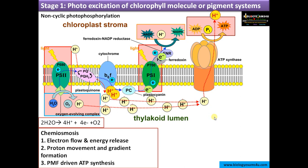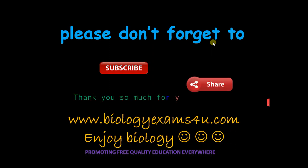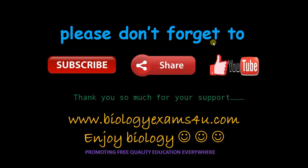This is how chemiosmosis operates in photosynthesis, and it is very similar to ATP synthesis in cellular respiration during the electron transport chain, as discussed in our last video. Hope things are clear — thank you so much for your support. You are with biology exams4u.com.